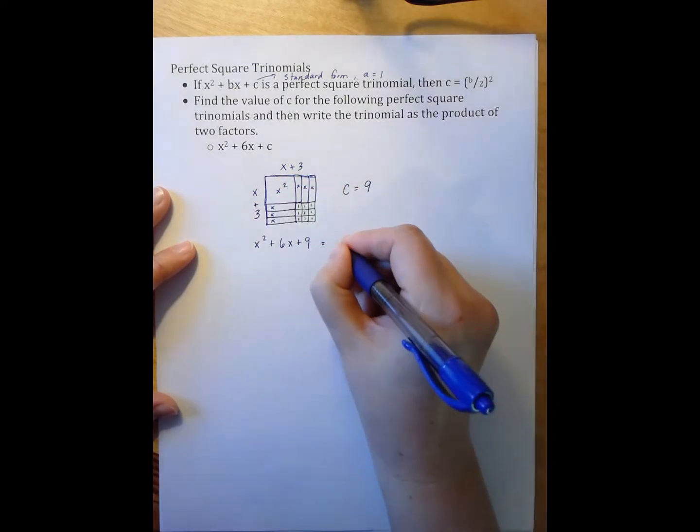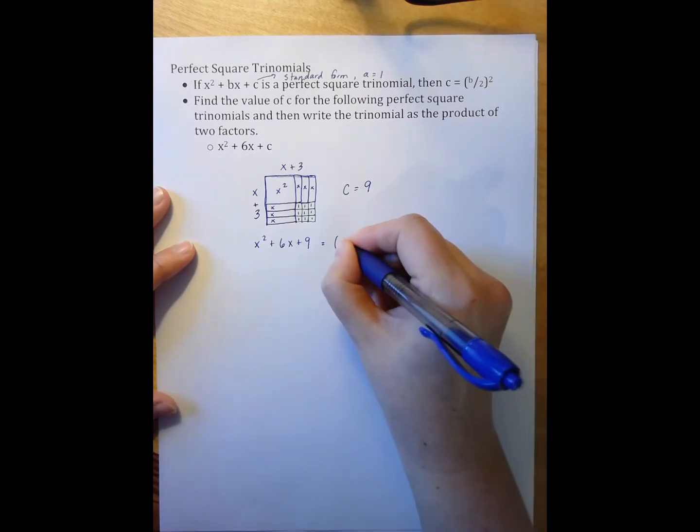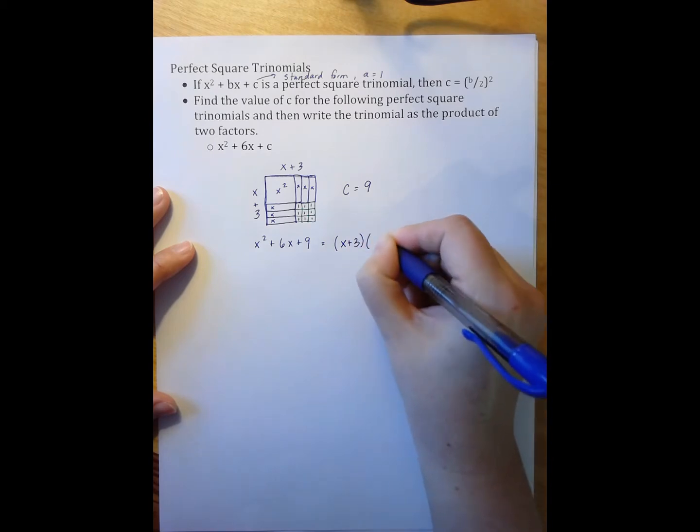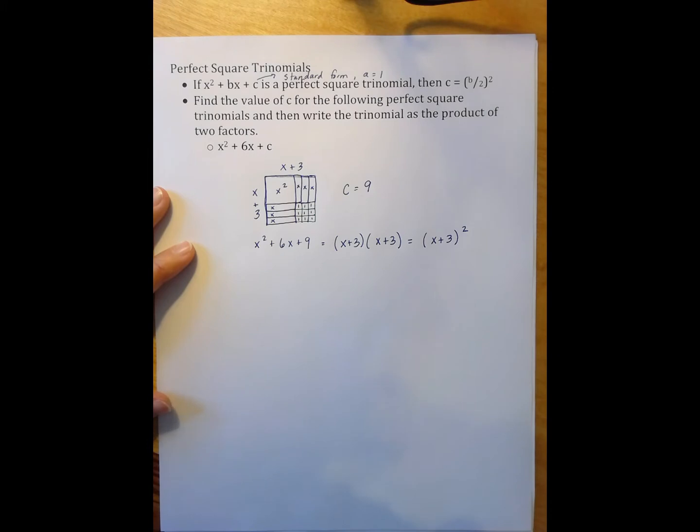Meaning I can write x squared plus 6x plus 9 as x plus 3 times x plus 3, which means I can write that in shorthand, simplified a little bit nicer as x plus 3 quantity squared. So this is the method that you may have explored in class.